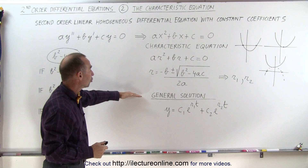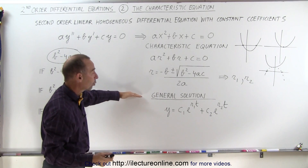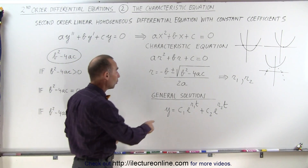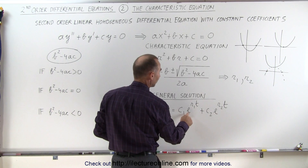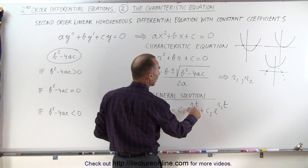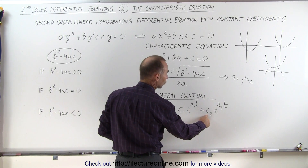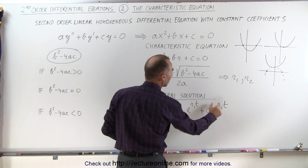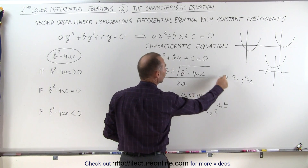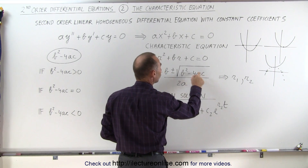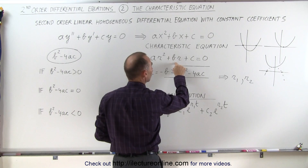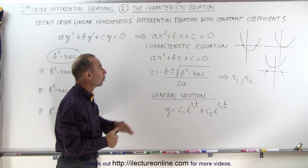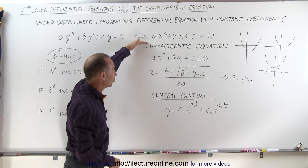The general solution of the differential equation using the characteristic equation is Y equals constant C1 times e to the R1t, plus constant C2 times e to the R2t. R1 and R2 are simply the solutions to the characteristic equation when we solve it just like a second order algebraic equation.